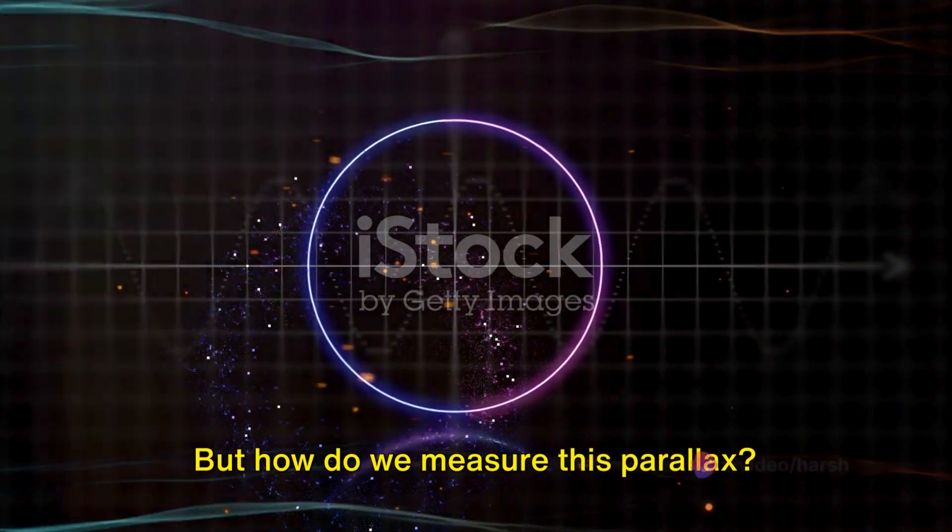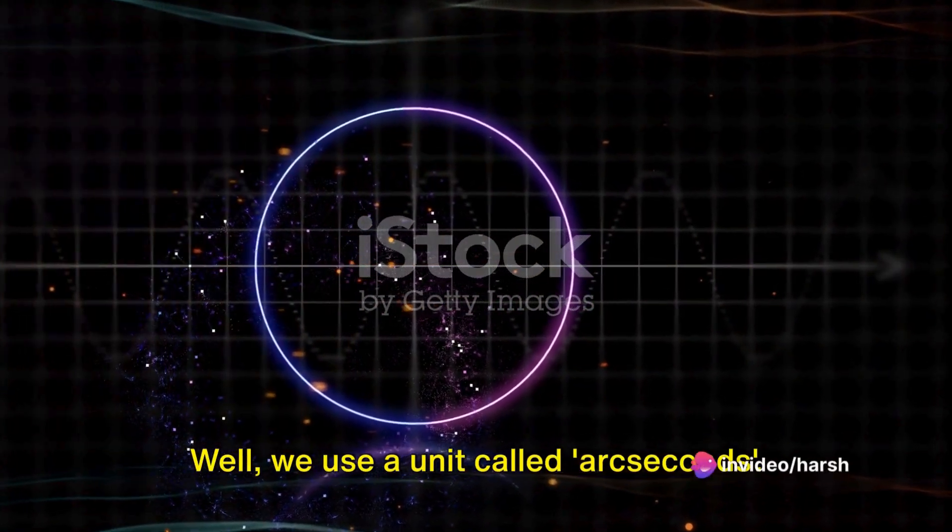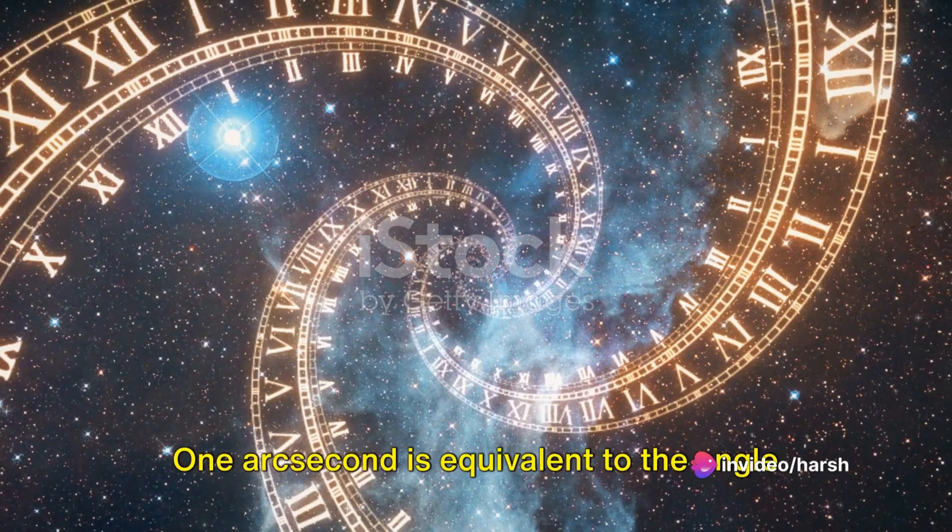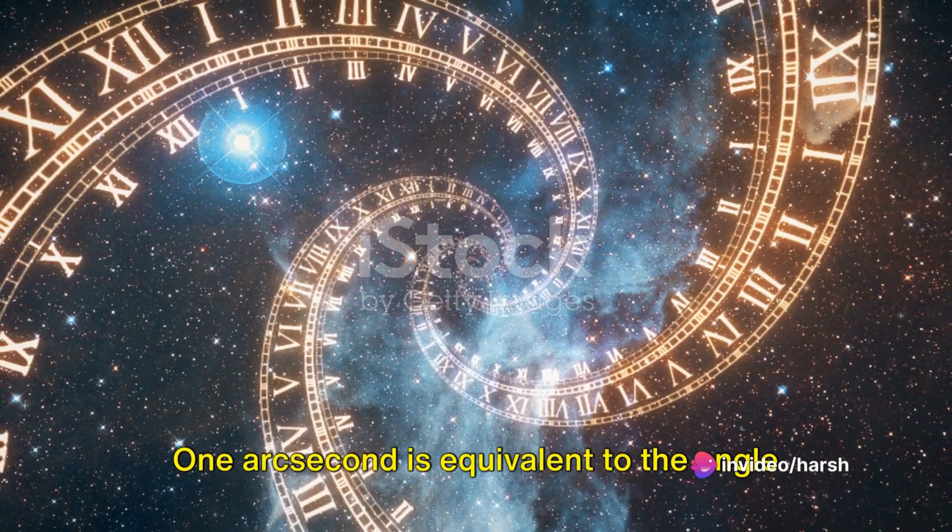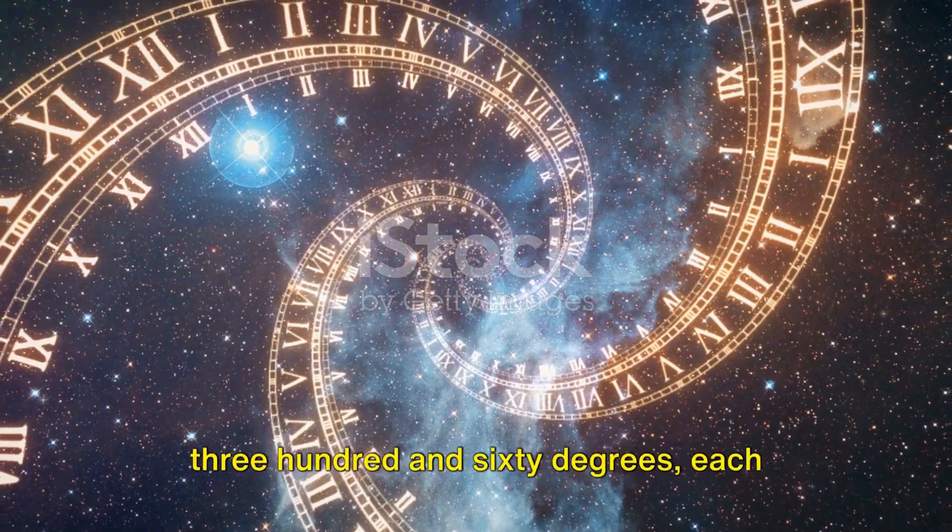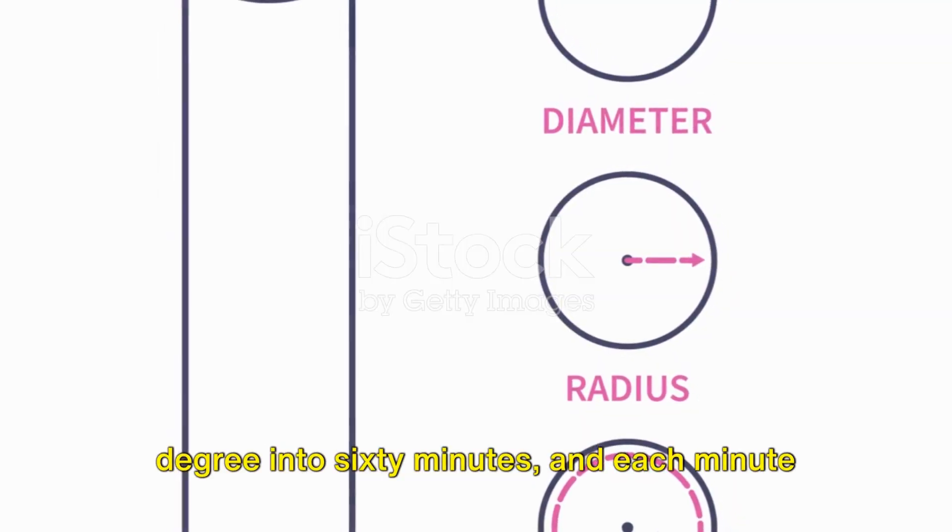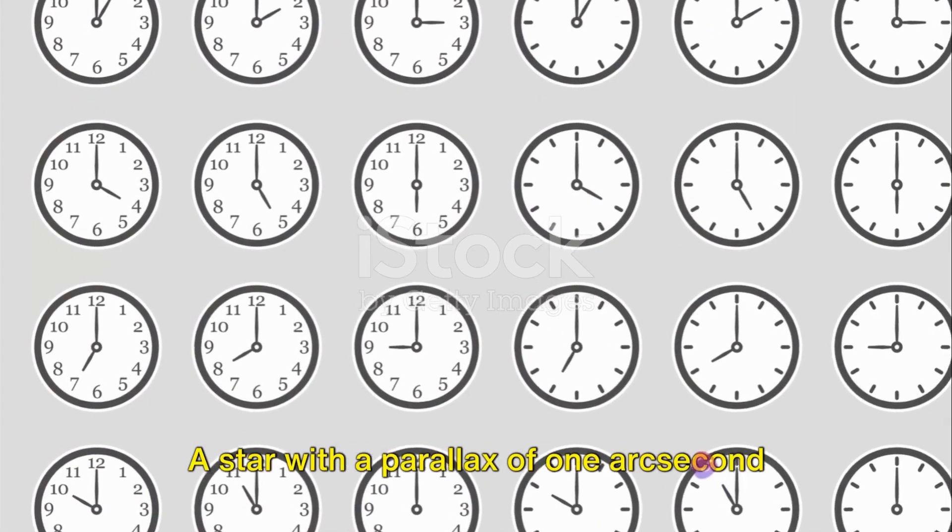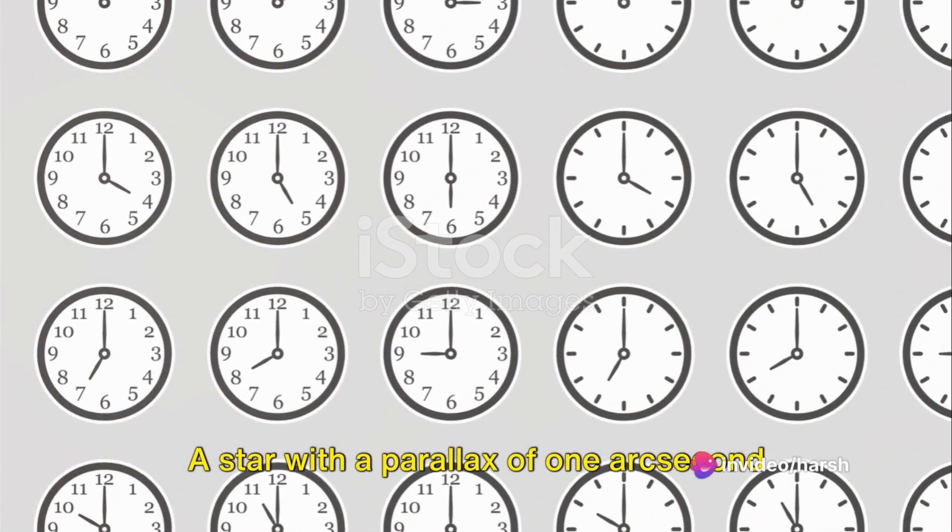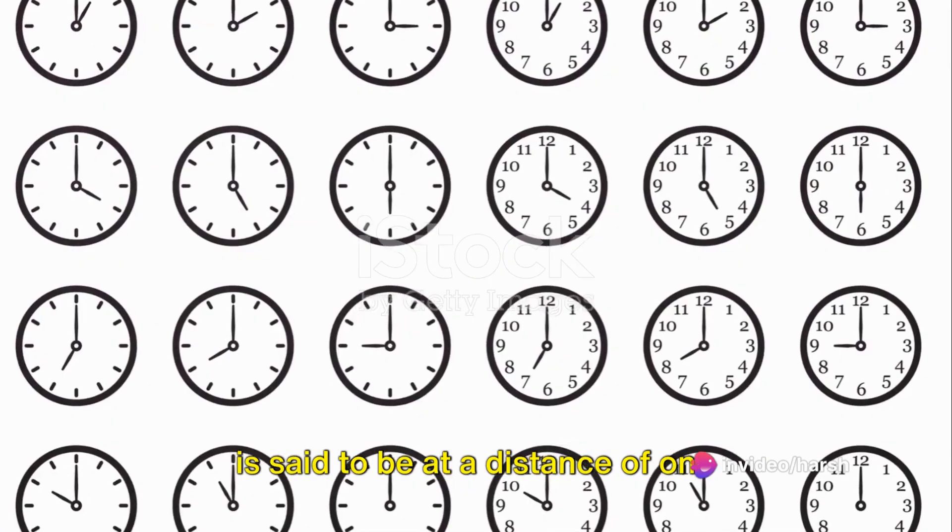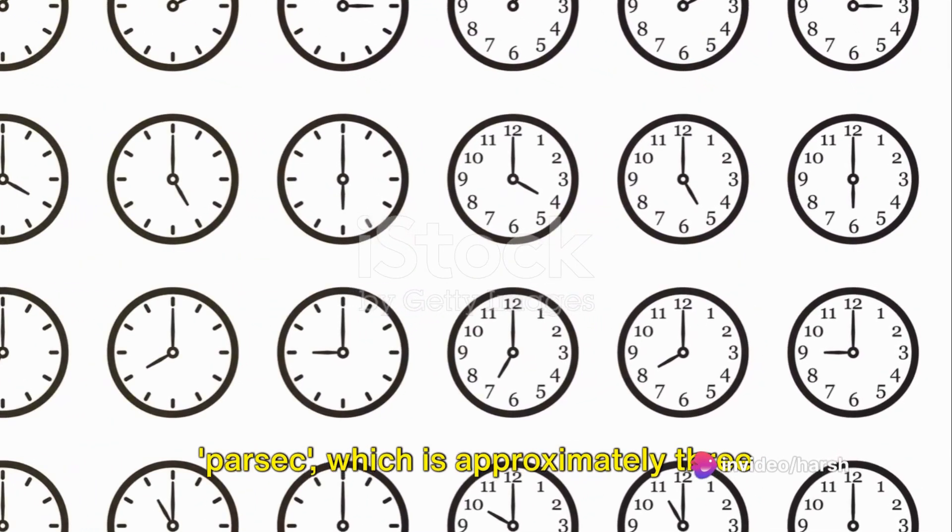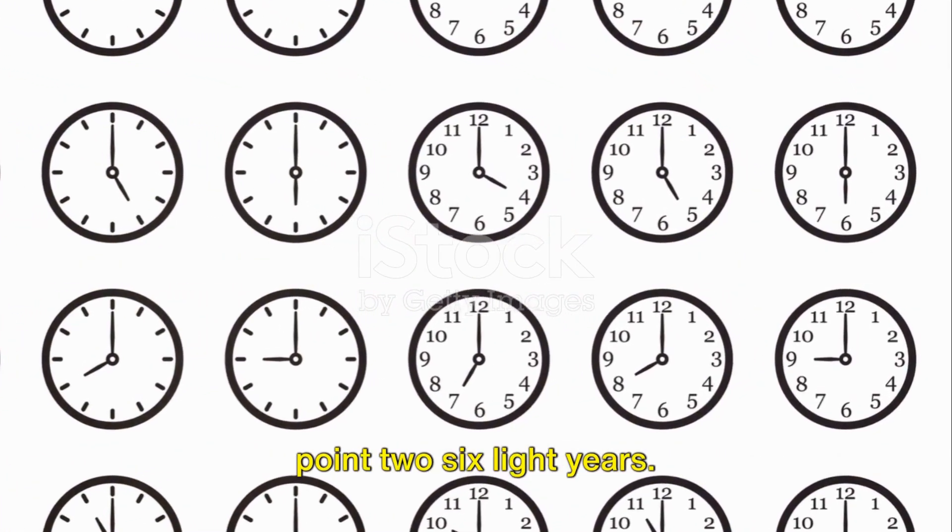But how do we measure this parallax? Well, we use a unit called arc seconds. One arc second is equivalent to the angle created when a circle is divided into 360 degrees, each degree into 60 minutes, and each minute into 60 seconds. A star with a parallax of one arc second is said to be at a distance of one parsec, which is approximately 3.26 light years.